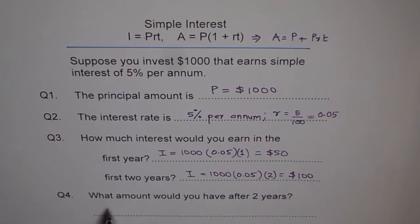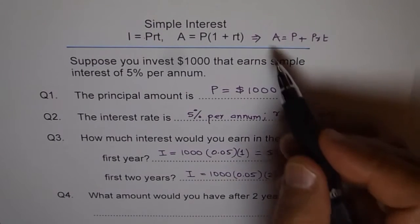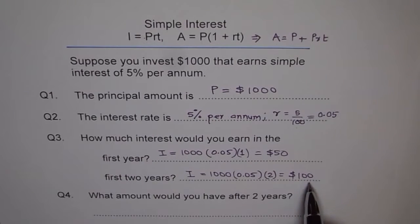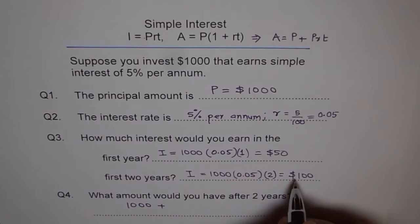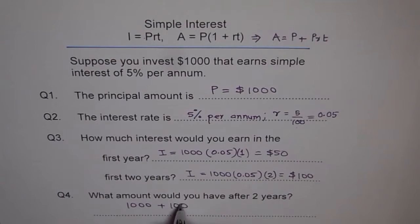Now, question four. What amount would you have after two years? You guessed it. The amount you have is your money invested plus the interest earned. So after two years, you will have your money invested was $1000 plus $100, which is the interest earned in two years, which is $1100.